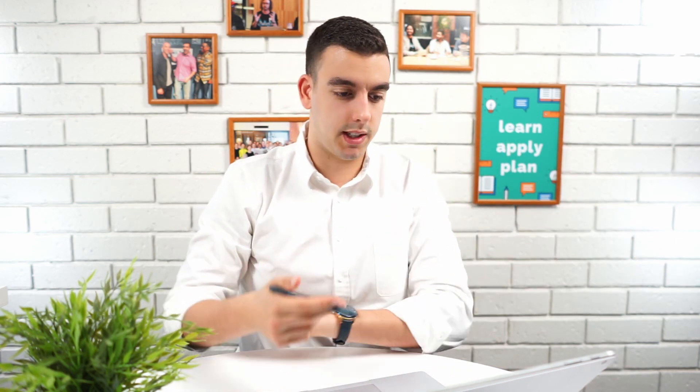So we know that the setup, this is a setup of dependent probability because all the previous events impact this now current choice. So let's choose from the answers.